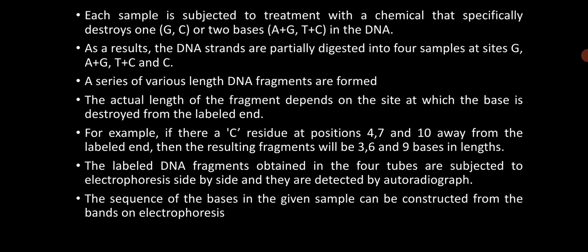The actual length of the fragment depends on the site where the base is present and is destroyed from the labelled DNA. For example, if there are cytosine residues at positions four, seven, and ten away from the labelled end, then the resulting fragments will be pieces containing three bases, six bases, and nine bases. The chemicals specifically make a cleavage wherever the cytosine residue is present. The cytosine residue at the fourth position causes a cleavage before the fourth base.